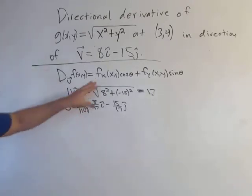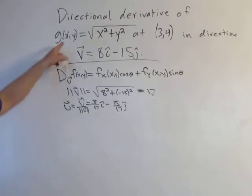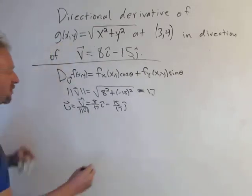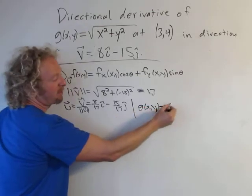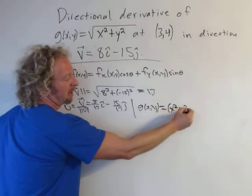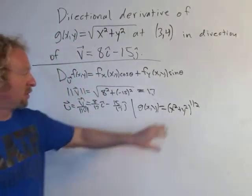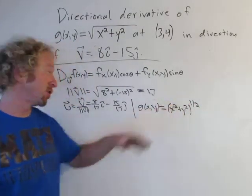And so now we're going to go ahead and compute the partials and then plug everything in and then work it out from there. So to compute the partials here you want to think of g as something to the one-half power.